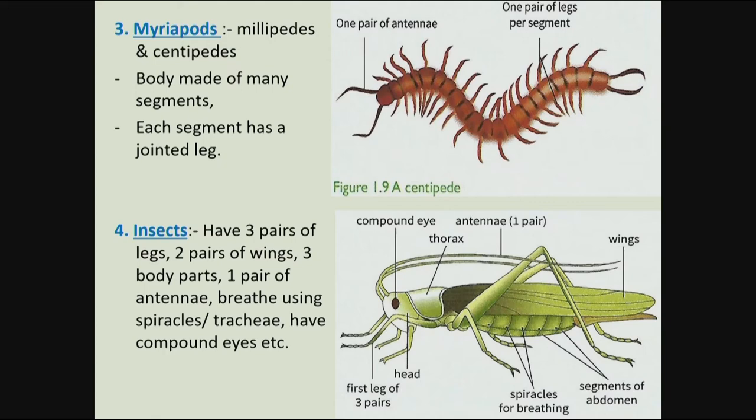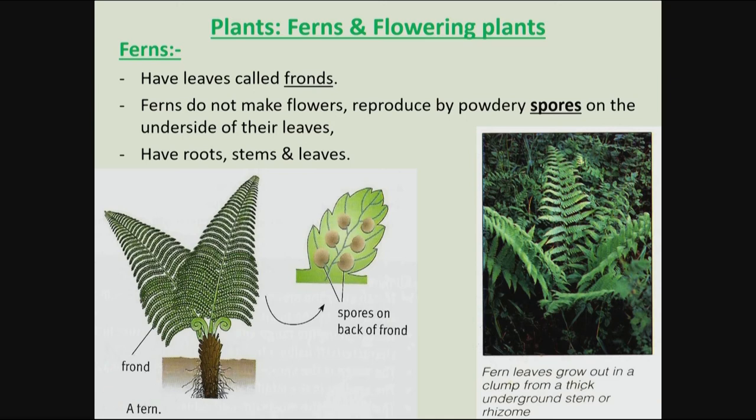Now, classifying plants. Generally, we classify plants into two major groups: those which reproduce using powdery spores, and another group which reproduce using seeds — using flowers that develop into seeds.